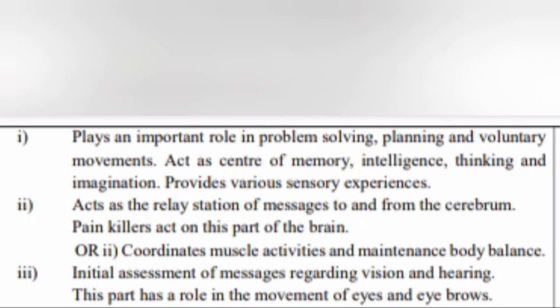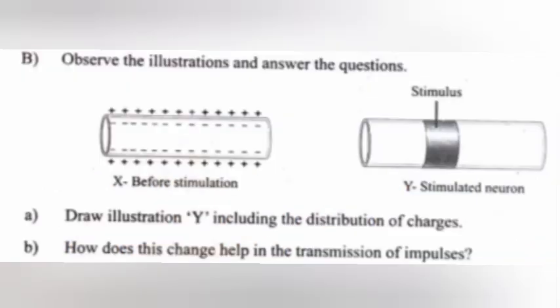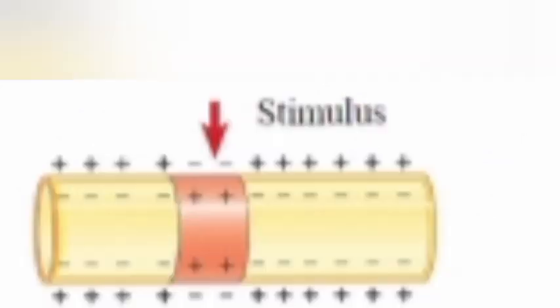Part 3 coordinates muscle activities and maintains body balance. Initial assessment of messages regarding vision and hearing. This part has a role in the movement of eyes and eyebrows.